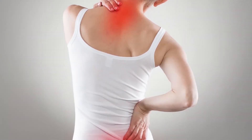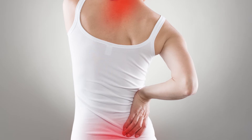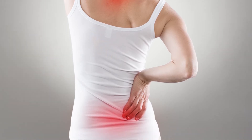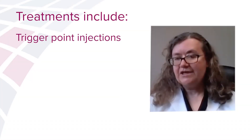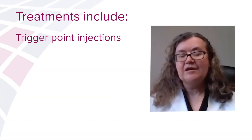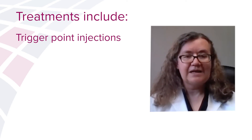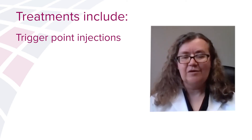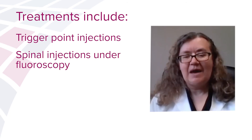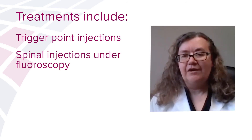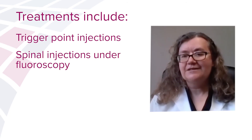I see patients with spinal pain anywhere from the occiput to the coccyx. We evaluate for doing injections; an X-ray or MRI might be done. Treatments include trigger point injections into the muscles — could be cervical, thoracic — I've done them in the lower extremities and upper extremities. Spinal injections under X-ray guidance or fluoroscopic guidance.